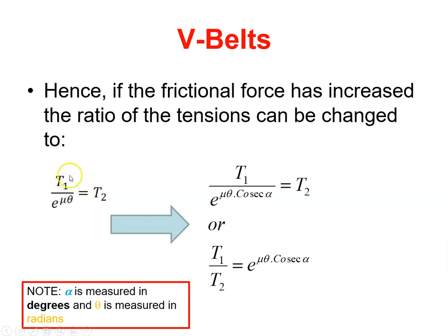Here was the original flat belt formula where we had μθ. Now with the V-belt, instead of μ, we're going to use μ cosecant alpha times θ. That's our new formula for V-belts.